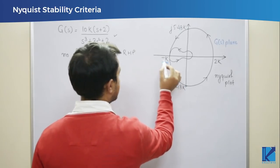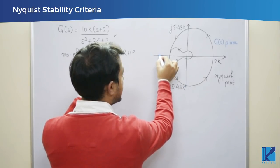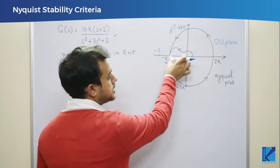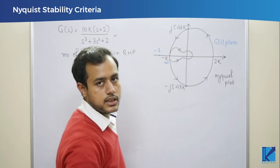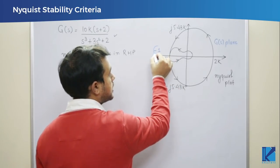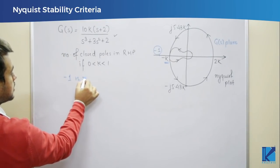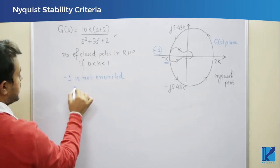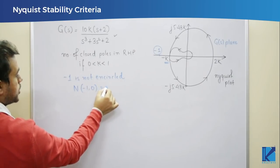If k lies between 0 and 1, then −k will be between 0 and −1. The distance from the origin is k, and since k is less than 1, the −1 point lies outside the plot intersection. This means the −1 + j0 point is not encircled, so the number of encirclements of −1 + j0 is N = 0.